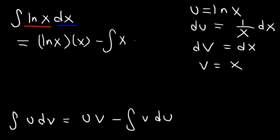v is x, du is 1 over x dx. So x times 1 over x, that's going to be 1. So far we have x ln x minus the integral of 1 dx.